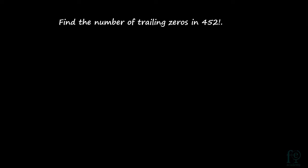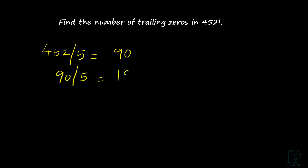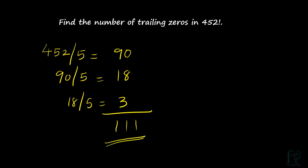Last question: find the number of trailing zeros in 452 factorial. 452 divided by 5 gives 90. Keep on dividing by 5 — 90 divided by 5 is 18, and 18 divided by 5 is 3. So your answer is 90 plus 18 plus 3, which gives 111. There are 111 trailing zeros in 452 factorial.